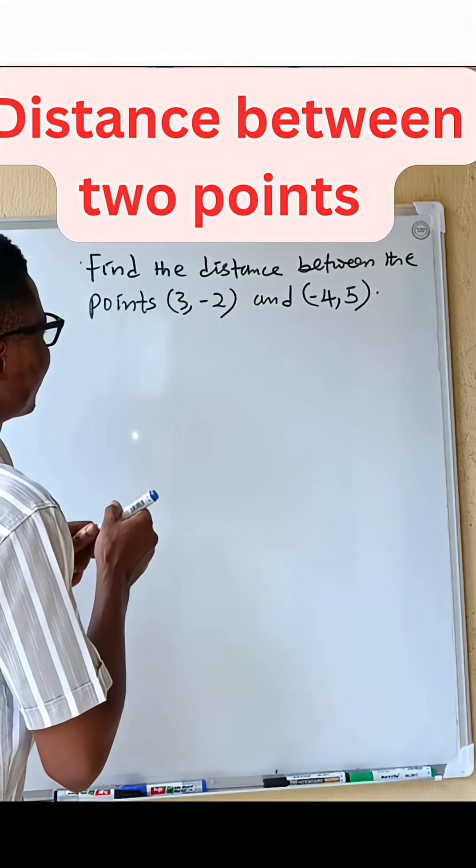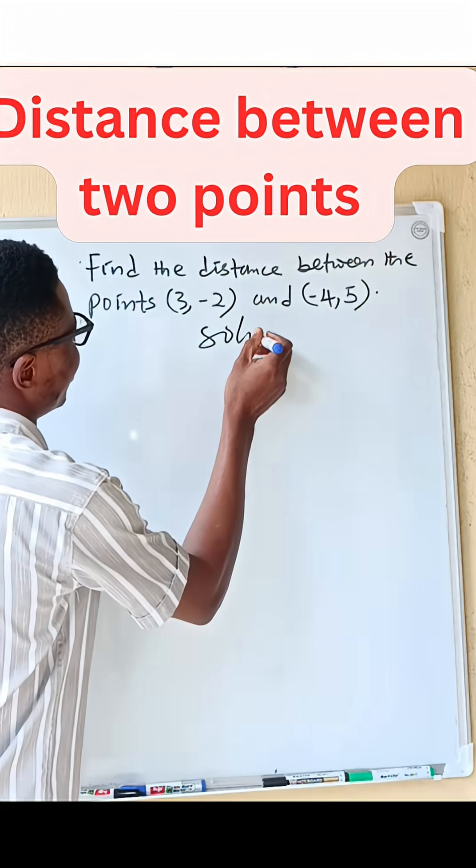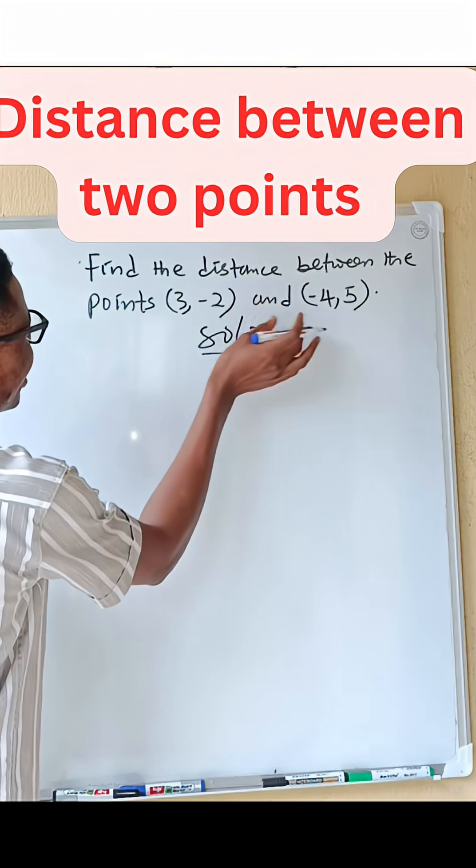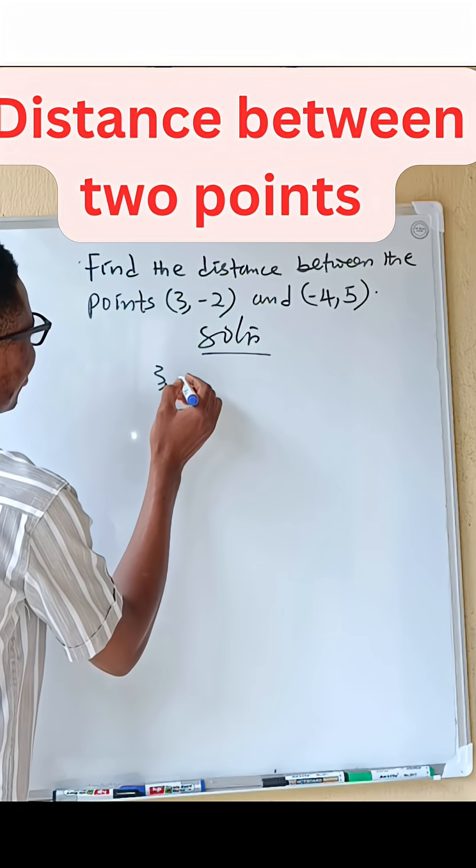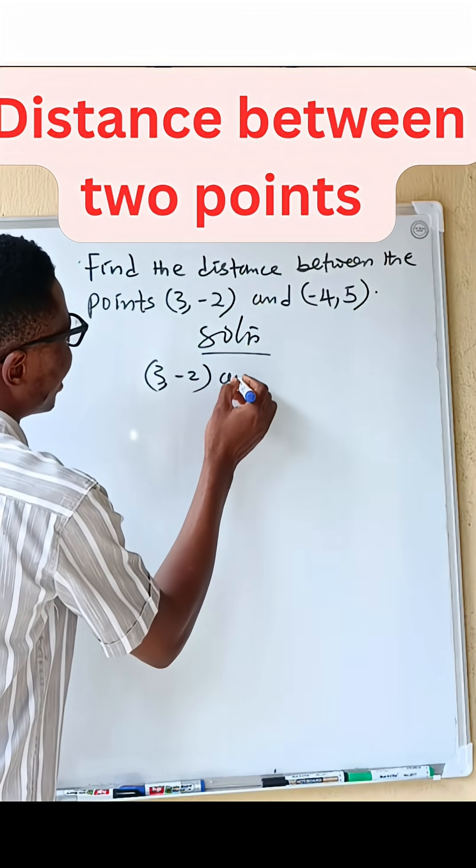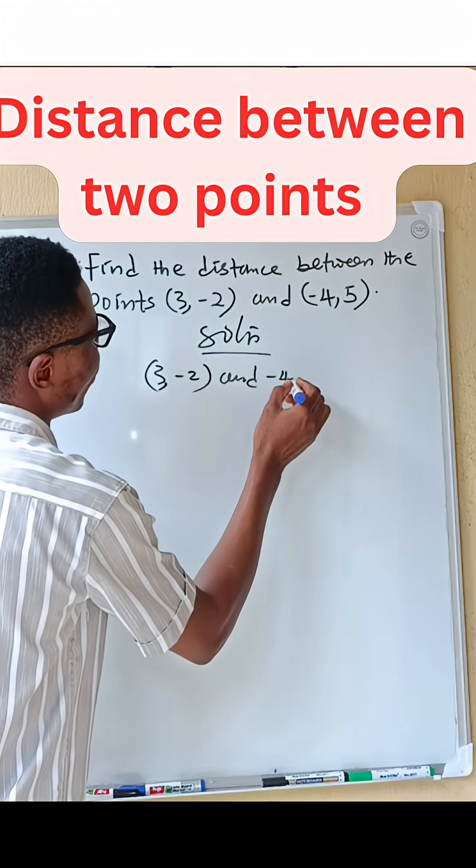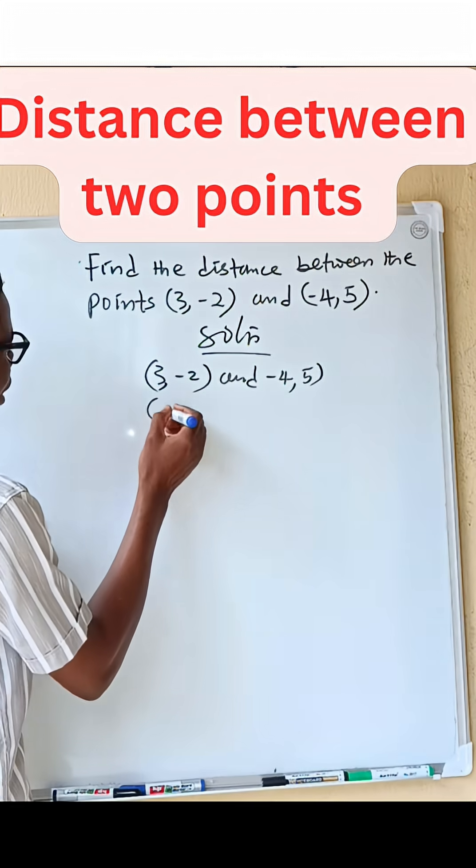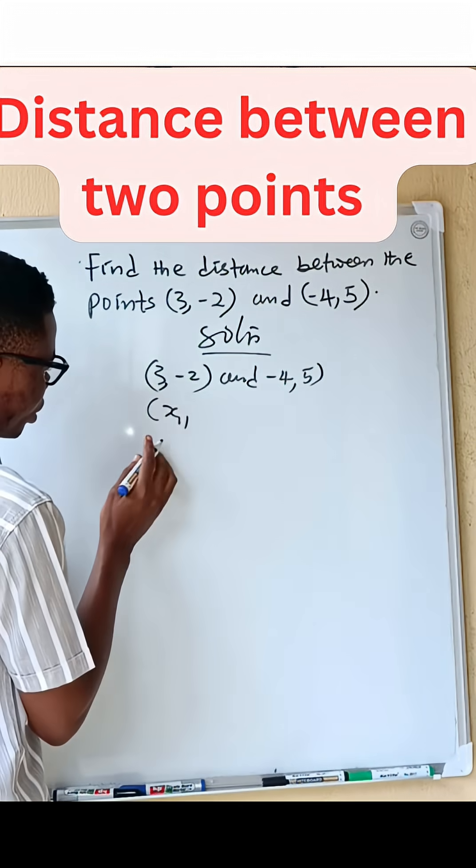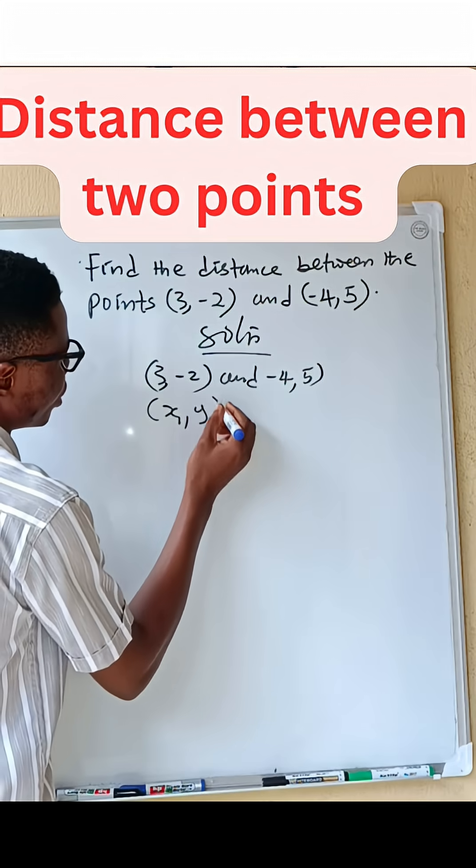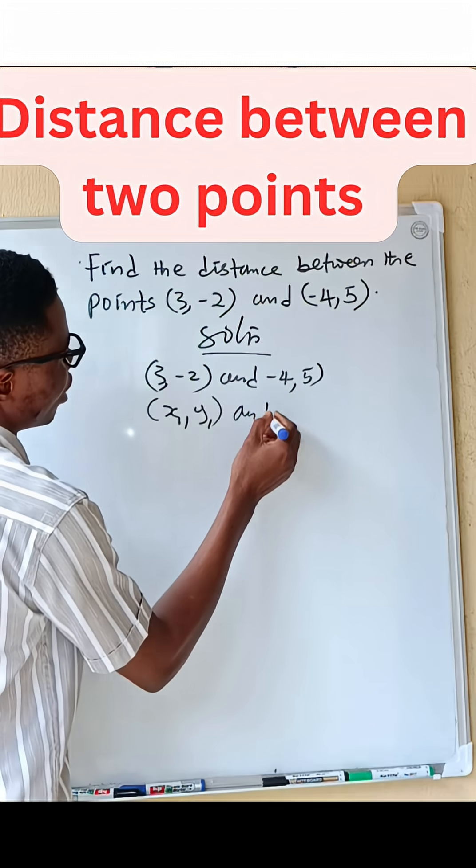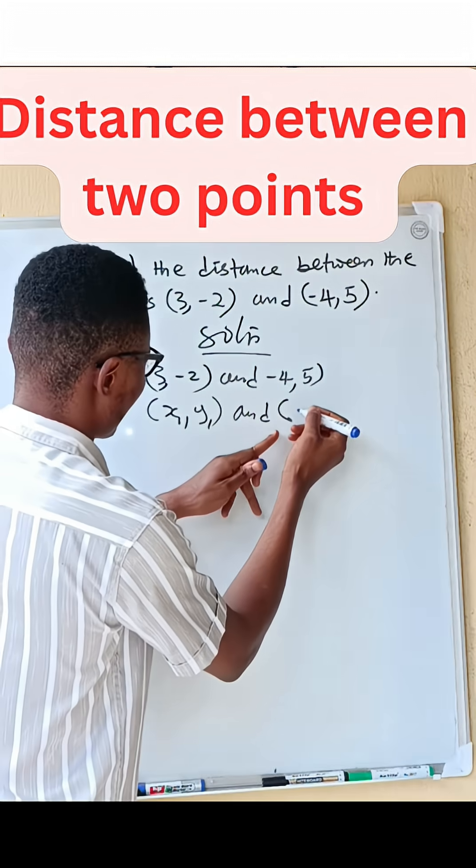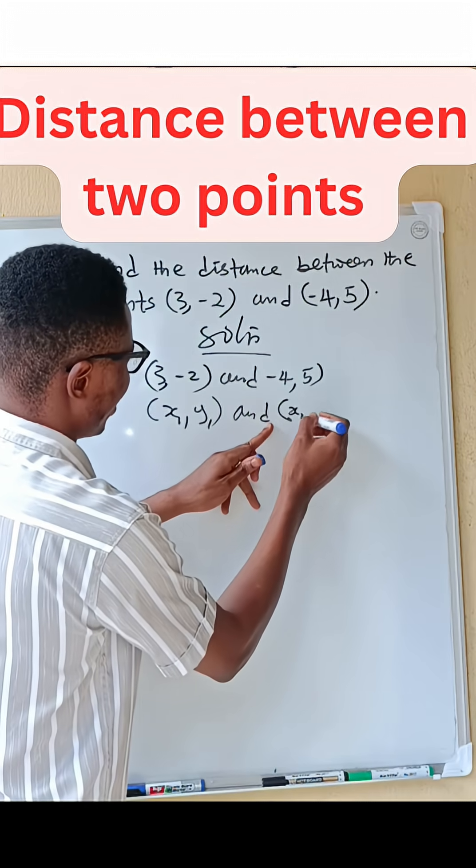Solution: The two points that are given, we have (3, -2) and (-4, 5). It means that our x1 coordinate and y1 is this one, then our coordinate of the next order is x2 and y2.